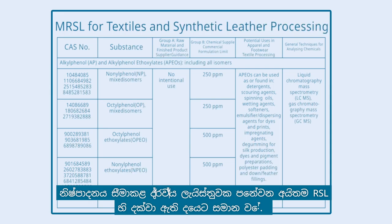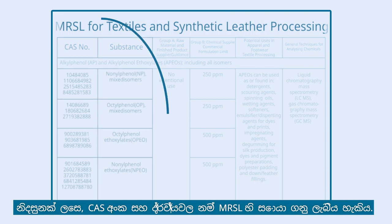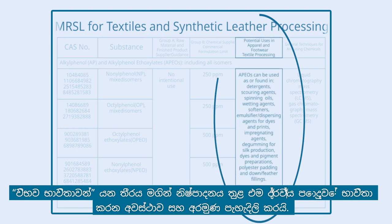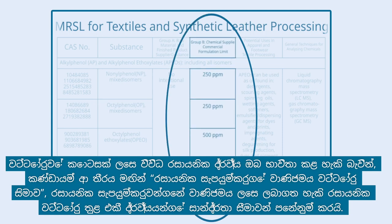The items shown in a Manufacturing Restricted Substance List are similar to those of an RSL. For example, the CAS numbers and names of substances can also be found in the MRSL. The Potential Uses column explains when and for what purpose the substance is commonly used during manufacturing. The General Technique column indicates the laboratory methods required for analyzing concentrations of these substances. The Group B column, Chemical Supplier Commercial Formulation Limit, shows the concentration limits of such substances in commercially available chemical formulations from chemical suppliers.